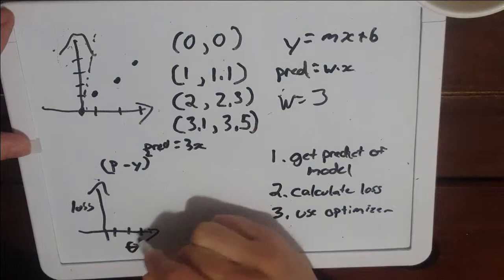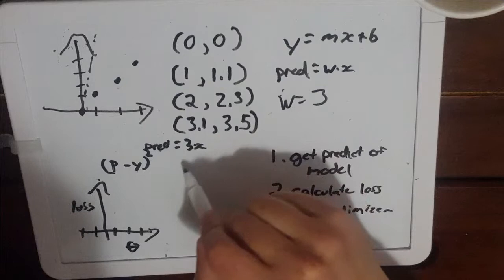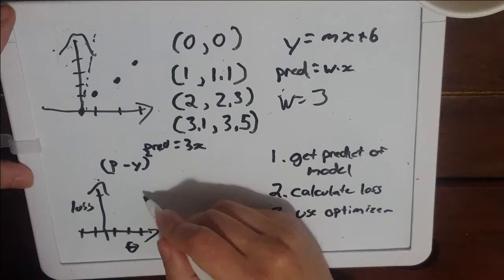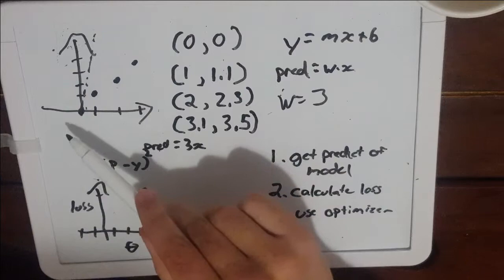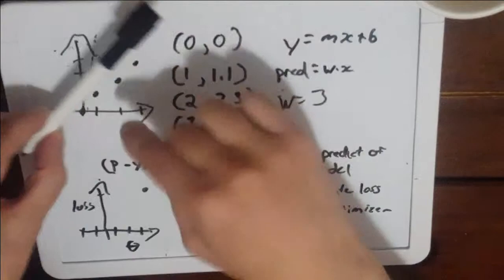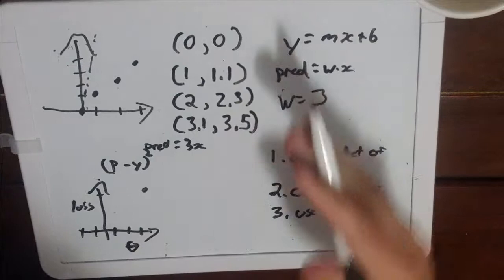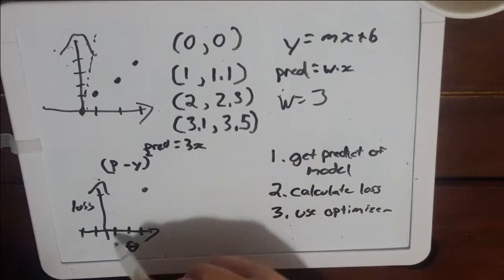So let's plot this. We get when our parameter is 3 we get a loss of 12.73 I think we said. Now our goal is to find the parameter that gives us the lowest possible loss. When our loss is zero we've adjusted our slope in such a way that when we calculate our prediction and our real values the loss is going to be close to zero. So that's what we're going to try and find in this graph.